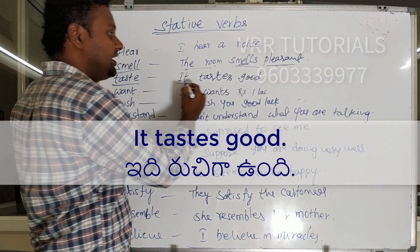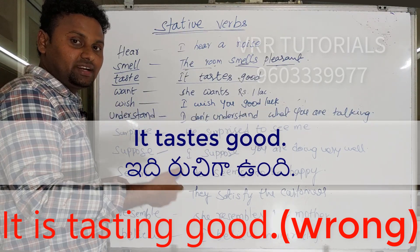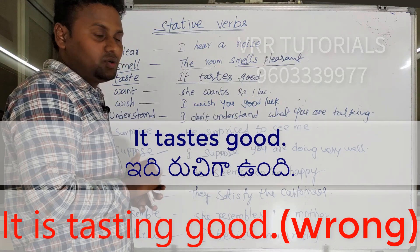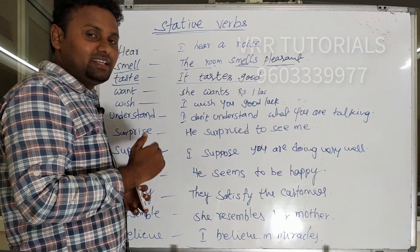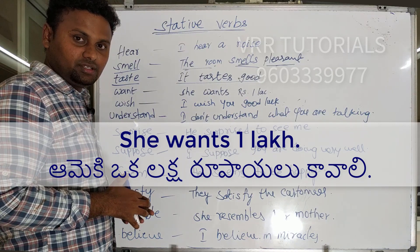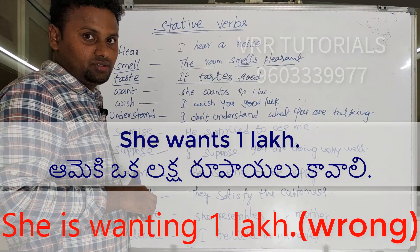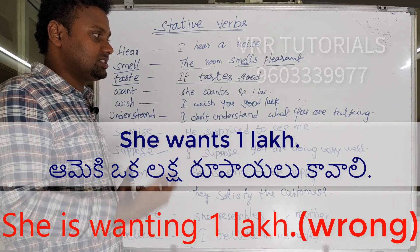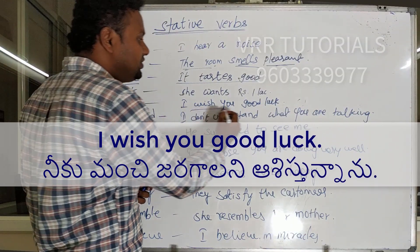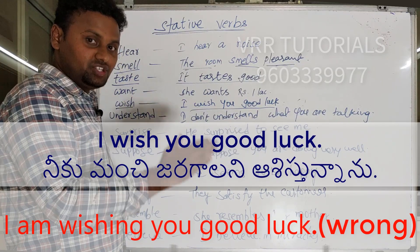Next: 'taste.' It tastes good — that is correct. We cannot say 'it is tasting good' — that is incorrect. Next: 'want.' She wants one lakh rupees. Don't say 'she is wanting one lakh rupees.' Though it is continuous, we say she wants one lakh rupees. Next: 'wish.' I wish you good luck. Don't say 'I am wishing you good luck.' I wish you good luck — that's enough.